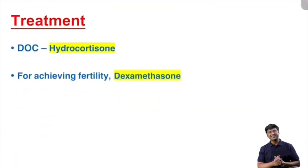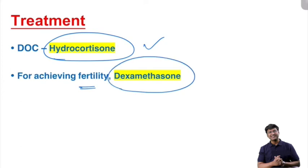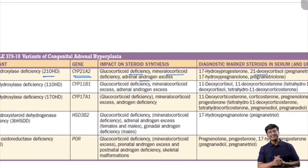Because there is glucocorticoid deficiency, the drug of choice is hydrocortisone. For achieving fertility, dexamethasone is given. To summarize: the most common gene mutated in congenital adrenal hyperplasia is CYP21A2, which causes 21-hydroxylase deficiency. Thank you very much.